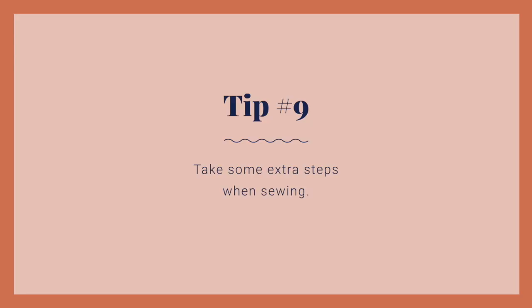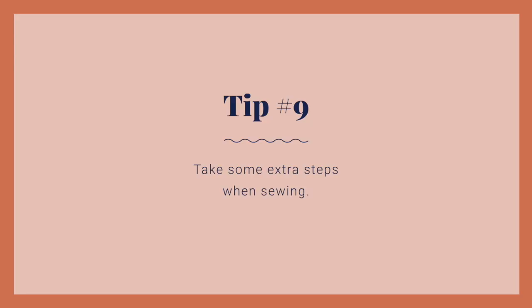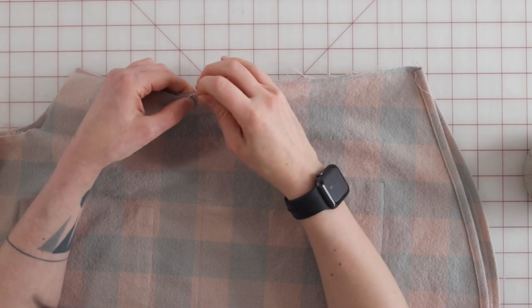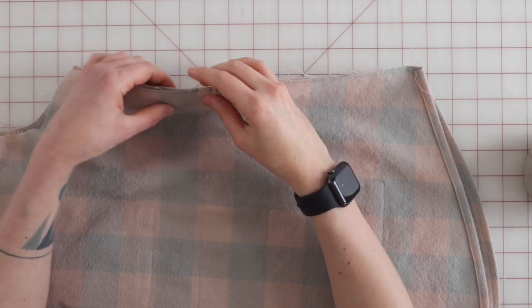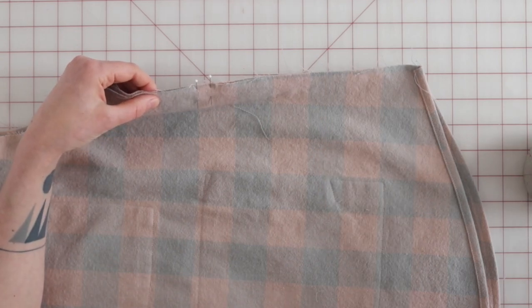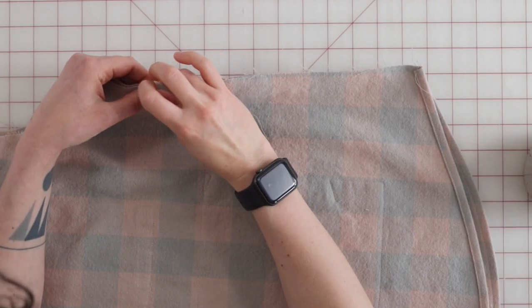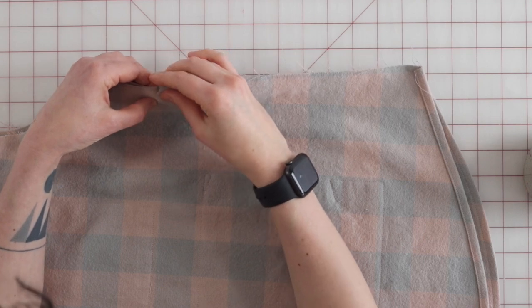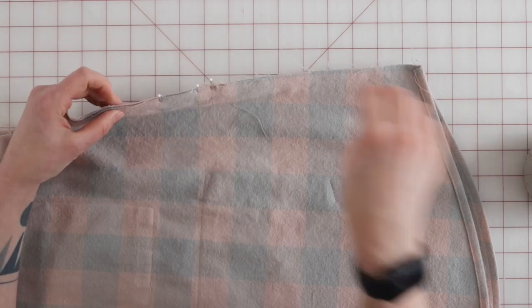Tip number nine, take some extra steps when sewing. Use more pins than usual and pin more carefully. It is a good idea to baste and make corrections before sewing those highly visible seams, especially when working with knits or slippery fabrics. Hand baste those tricky seams that want to slip out of alignment.